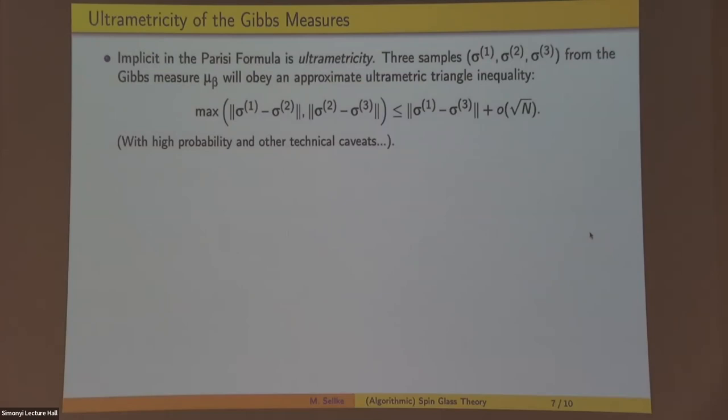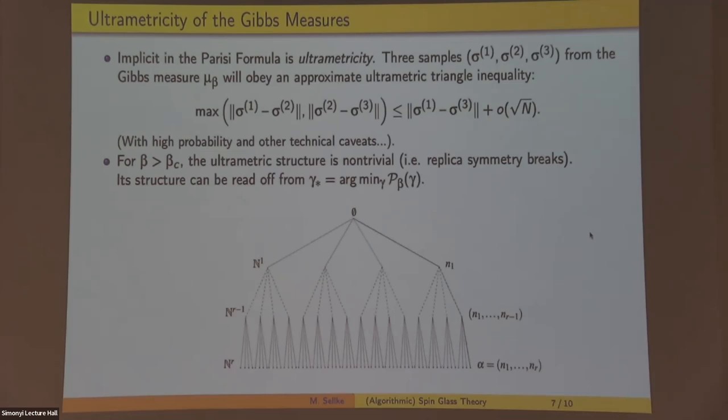So now let me say a few interesting qualitative properties to convince you that something interesting is happening. So the first interesting qualitative property is ultrametricity. It's kind of implicit in the Parisi formula. And it says the following. I'm going to generate this random probability distribution on the cube. And I'm going to take, let's say, three independent samples from it. Then with high probability modulo some caveats we'll sweep under the rug, these three points will approximately obey the ultrametric triangle inequality. So what this kind of means, if let's say you take a larger constant number of samples, like 1,000, they'll be arranged into a finite approximately ultrametric space.